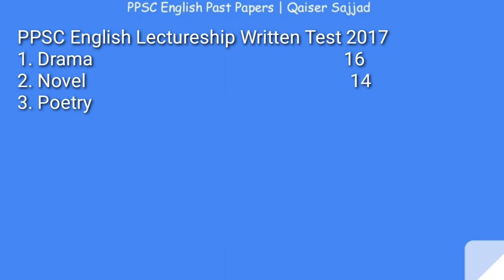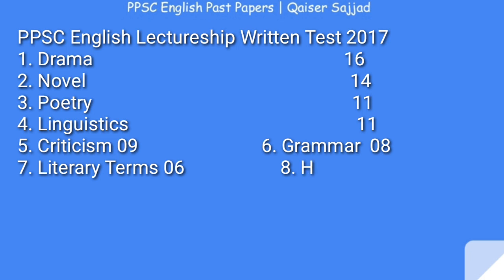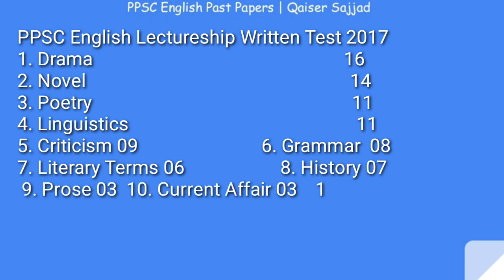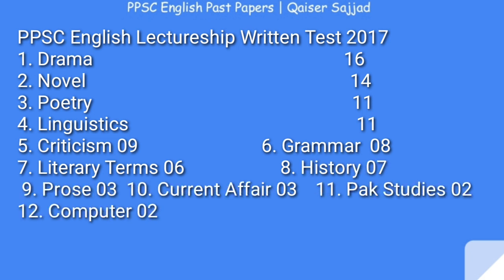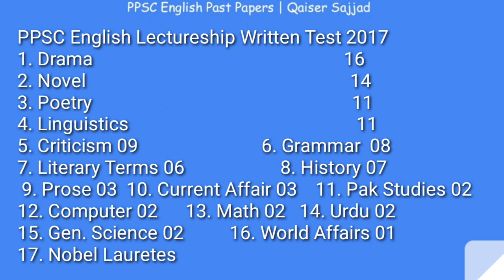In the 2017 paper, Poetry had 11 marks, Linguistics had 11 marks, Criticism had 9 marks (at number 5), Grammar had 8 marks, Literary Terms had 6 marks, History of English Literature had 7 MCQs, and Prose had 3 MCQs. For the first time, General Ability questions were also introduced in this paper, which were not present in the previous two papers.